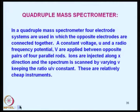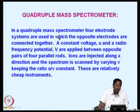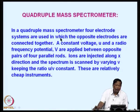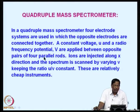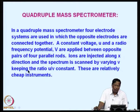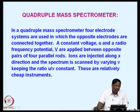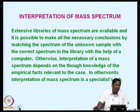A quadrupole mass spectrometer uses four electrode systems in which opposite electrodes are connected together. A constant voltage U and a radio frequency potential are required, applied between the opposite pairs of four parallel rods. Ions are injected along the x direction and the spectrum is scanned by varying the voltage while keeping the U/V ratio constant. These are relatively cheaper instruments compared to time-of-flight instruments.